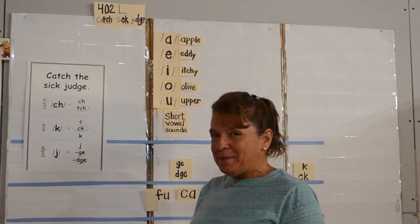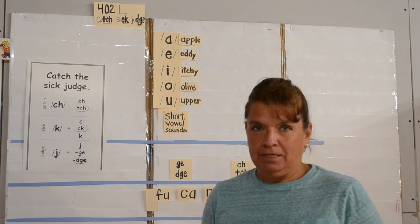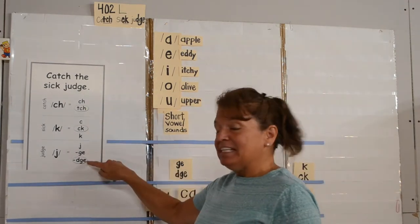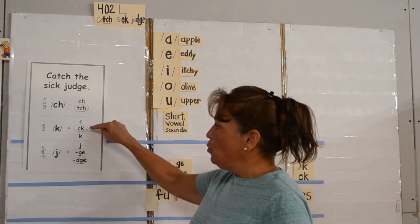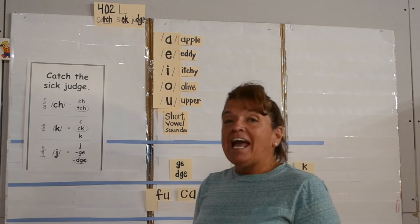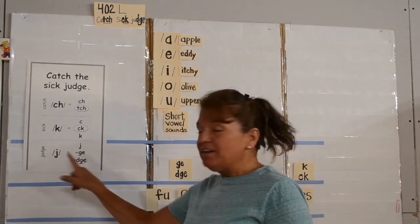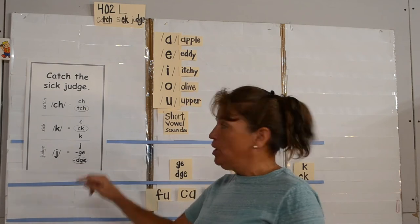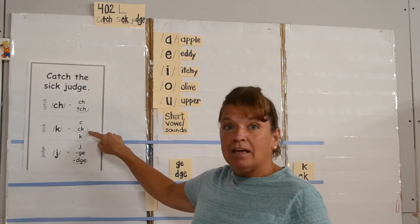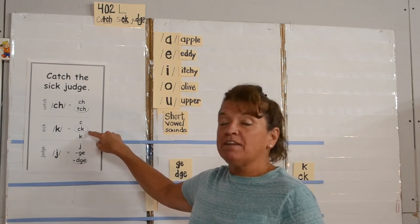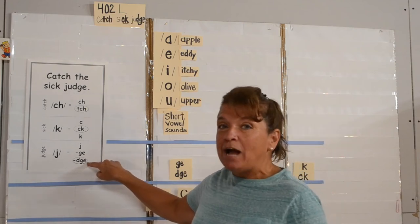Notice that one of them in each group is circled — the one with the most letters: T-C-H, C-K, and D-G-E. The rule is the only time you ever use the spelling with the most letters is if you hear a short vowel sound right in front of the ch, right in front of the k, or right in front of the juh. So the only time you'll ever use T-C-H is if there's a short vowel sound right in front of the ch. The only time you use C-K is if there is a short vowel right in front of the k. The only time you'll ever use D-G-E is if there's a short vowel sound right in front of the juh.